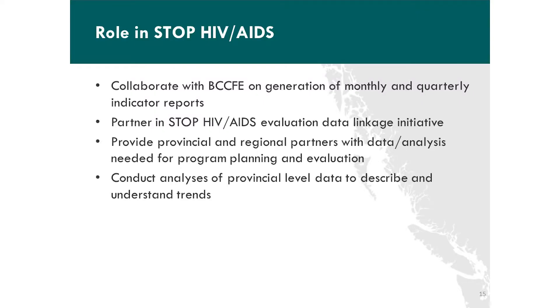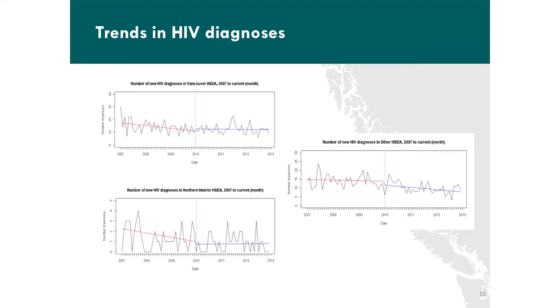Our role in Stop HIV has been collaborating with the Centre for Excellence on generation of monthly and quarterly indicator reports, partnering on the data linkage initiative, and providing provincial and regional partners with data and analysis needed for program planning. For the participating pilot sites, we generate graphs showing the number of new diagnoses by different HSDAs and looking at trends over time using statistical methods. We generate this data on a monthly basis and provide it to all Stop partners, and we'll be looking at how to revise this so it meets the needs of all regions.